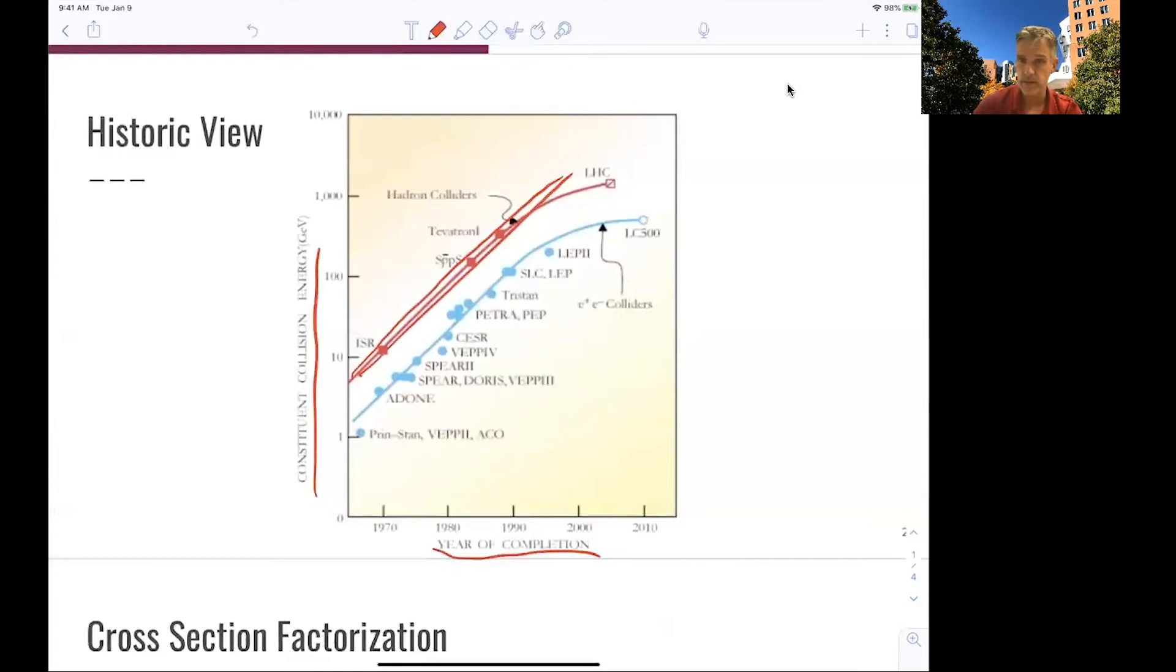The plot here called the Livingston plot, and it's a little bit old. We are now here in 2020. We haven't built this machine yet. We might build a lepton collider at 250 GeV in 10 years from now, or 15 years from now. And also the LHC is very stable at this energy here.